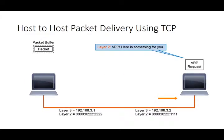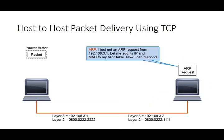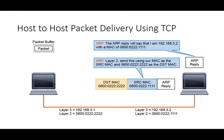Layer two strips off the header and hands it up: 'Hey ARP, here is something for you.' ARP says: that's an ARP request from 192.168.3.1. Now that I've heard from it and know its MAC address, I'll put that in my ARP table. Then ARP prepares a reply: 'I am 3.2 and my MAC address is 0800.0222.1111.' ARP tells layer two to send this ARP reply using its own MAC as source, directly to 0800.0222.2222 — no need to broadcast. Layer two sends it and the packet is on its way.